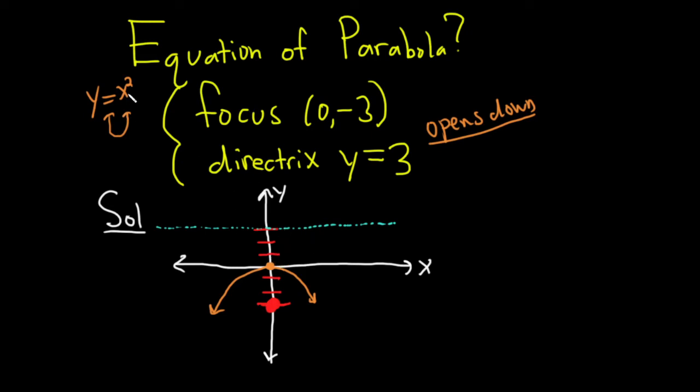So going to open up or down. It opens down, so the formula is X minus H squared equals 4C Y minus K. So if it opens up or down, the X is squared. If it opens left and right, the Y is squared.